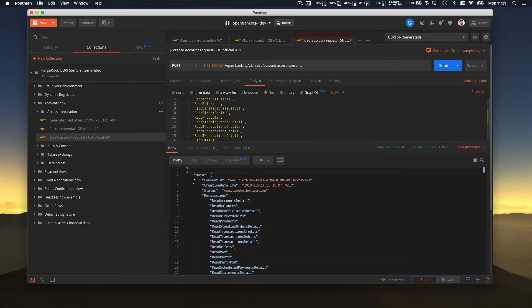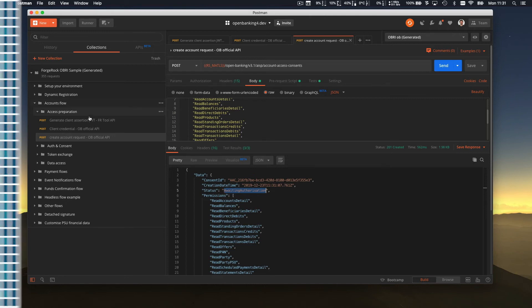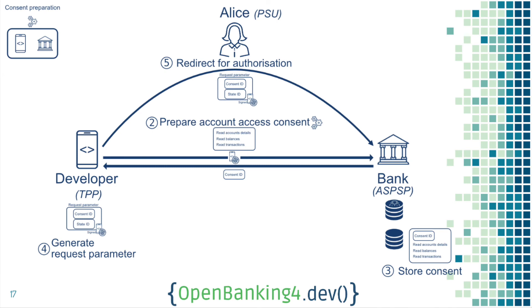As a response, the bank agrees and returns the same kind of payload you requested, but with three additional things: the consent ID and a status telling you that you are requesting authorization. We've just done steps two and three with the bank, and we've got the consent ID. Now we need to create the request parameter, embed the consent ID in it, and redirect Alice to the bank with this request parameter as a GET parameter.